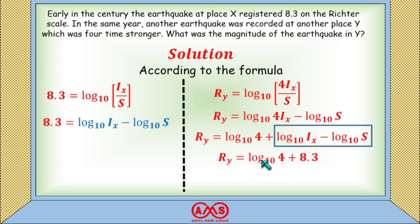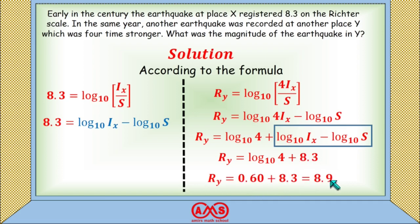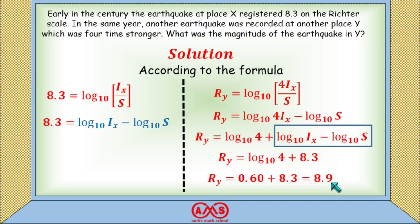The value of log₁₀(4) is 0.60, and 0.60 + 8.3 = 8.9. So the magnitude of the earthquake in Y is 8.9 on the Richter scale.